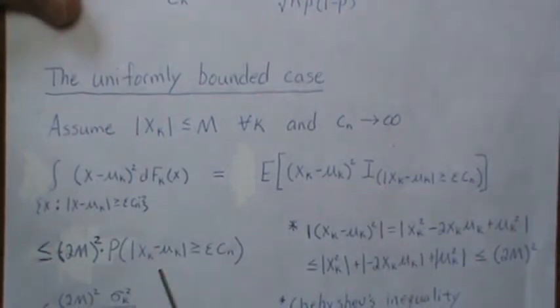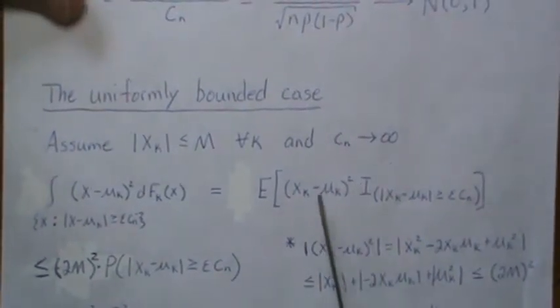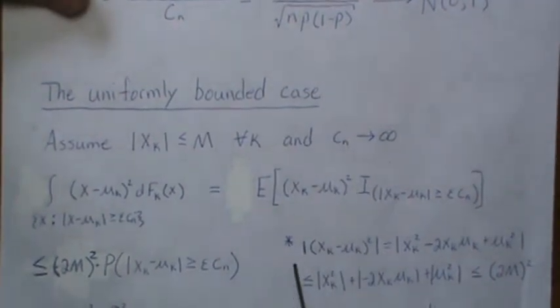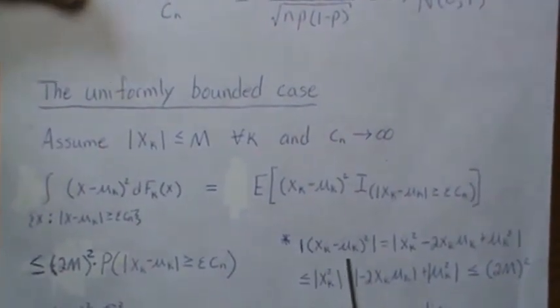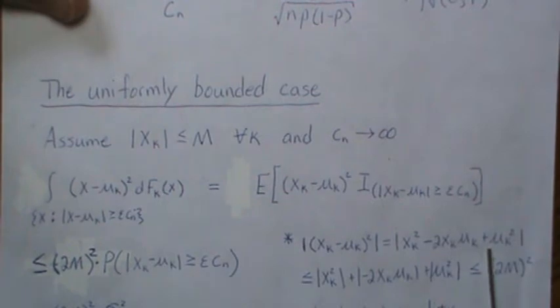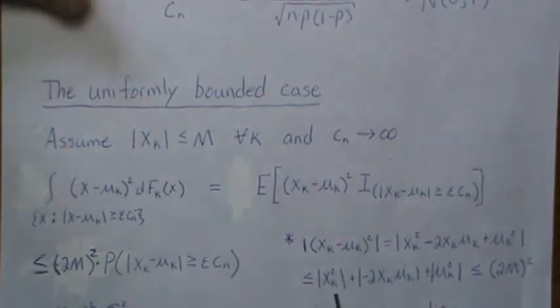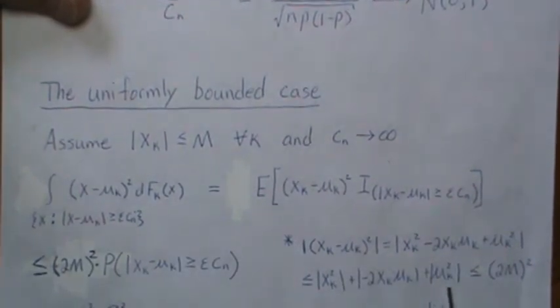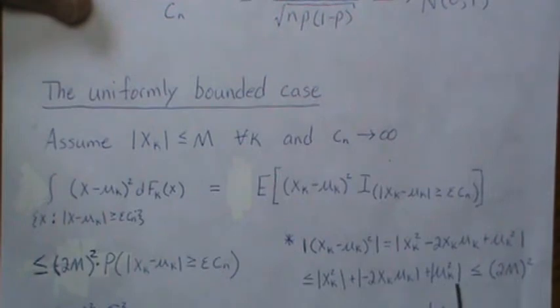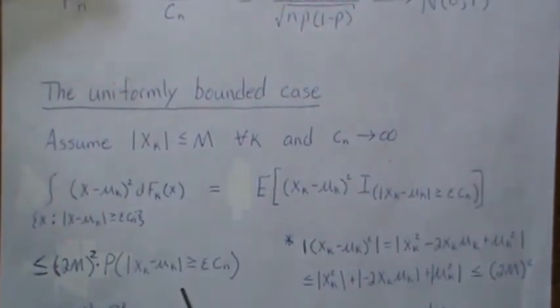The constant we factor out is 2M squared. To derive this: since the quantity squared is always positive, we can expand the quadratic. The absolute value of each piece is at most M squared, and the cross term gives at most 2M squared, so the total is at most 4M squared — which equals (2M)^2. That's how we obtain the 2M squared factor.